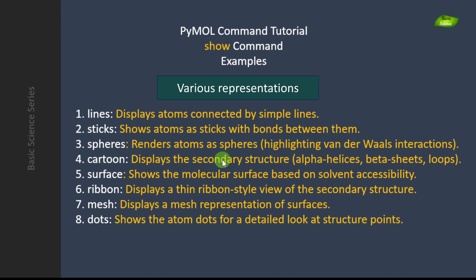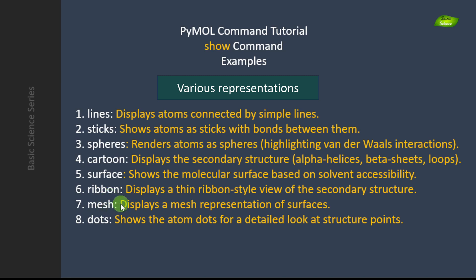Cartoon shows secondary structure — alpha helices, beta sheets, and loops. Helices are the helical structure, sheets are sheet-like structures, and loops are unstable structures present at the sides, or at the start or end of the protein. Surface shows the molecular surface based on solvent accessibility. You also have ribbon — a thin, flat secondary structure representation — as well as mesh and dot representations. All these are really beautiful and can show a lot of molecular and biophysical information.